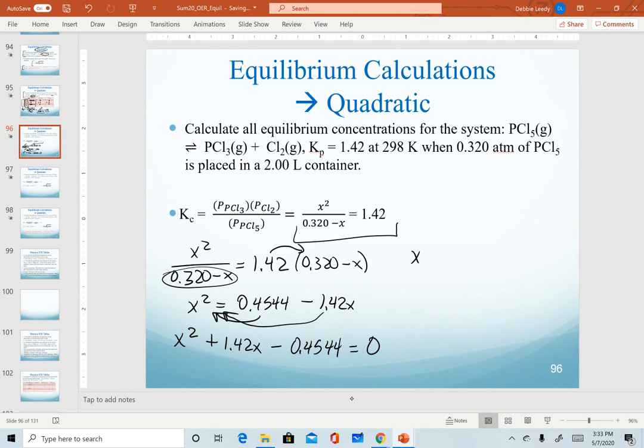So remember in our quadratic, x is equal to negative b plus or minus the square root b squared minus 4ac over 2a. And so the a, b, and c in this equation represent the coefficients for each term. So the a is always in the highest order term, the coefficient. So a is going to be 1.